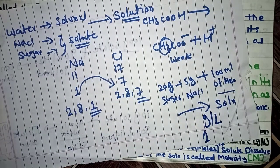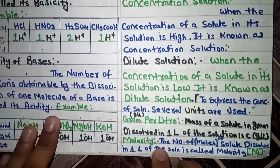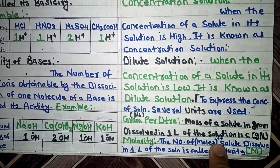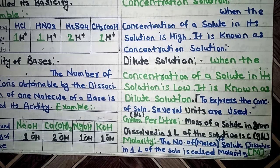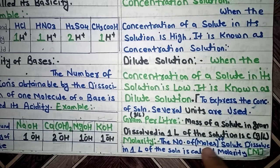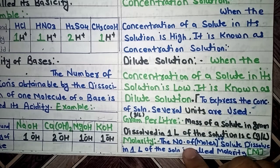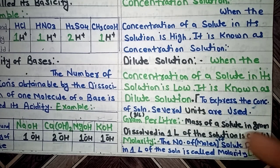The second way is molarity. Definition: the number of moles of solute dissolved in one liter of the solution is called molarity. Here we talk about the number of moles of solute — how many moles are dissolved. When both the solute and solvent are in liquid form, we use molarity. So for liquid-liquid solutions, we use molarity.